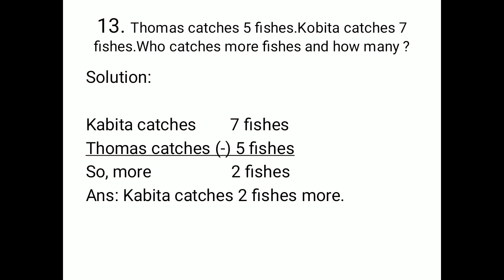Kubita catches 7 fishes and Thomas catches 5 fishes, so Kubita catches more. To find how many more, you have to subtract. Write the second line first: Kubita catches 7 fishes, then Thomas catches 5 fishes. 7 minus 5 equals 2. The answer is 2 fishes. Write down the full answer: Kubita catches 2 fishes more. Because the question asks who catches more and how many more — there are 2 questions in one line, so you answer both: Kubita catches 2 fishes more.